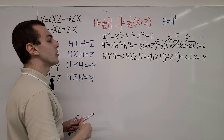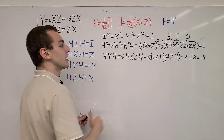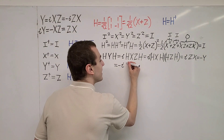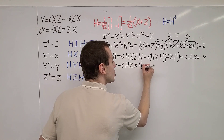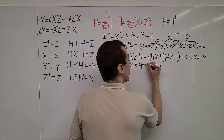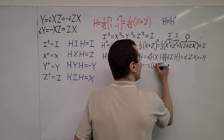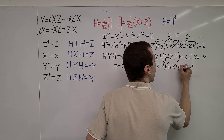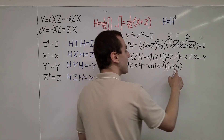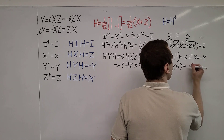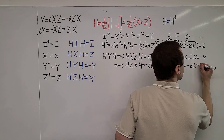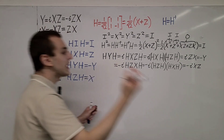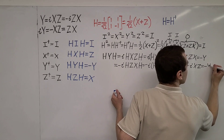We could also do it an alternative way. Instead of writing Y as iXZ, we use the opposite order, giving minus i times H Z X H. Inserting H² between Z and X gives minus i times (H Z H)(H X H), which evaluates to minus i times X times Z, which is minus iXZ. But minus iXZ has the opposite sign to what we had, so again we conclude that H Y H equals minus Y.